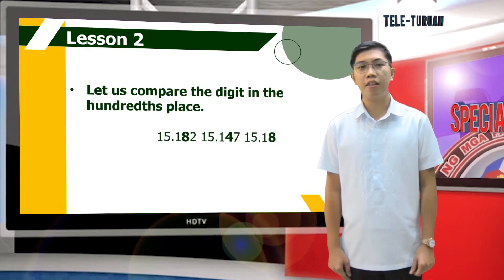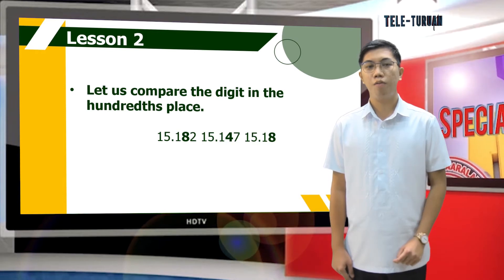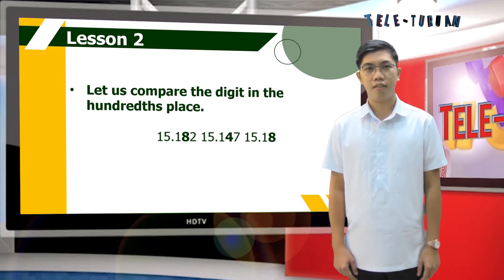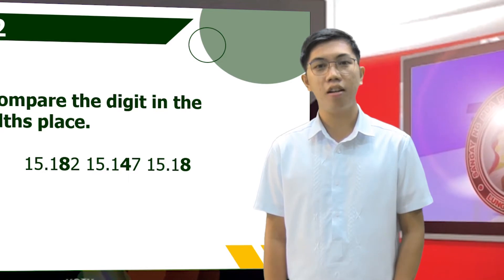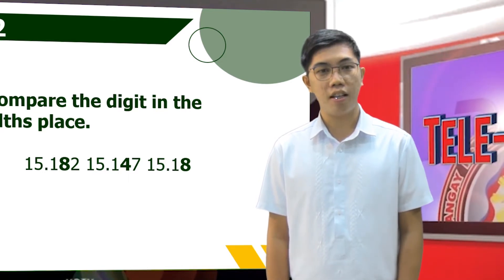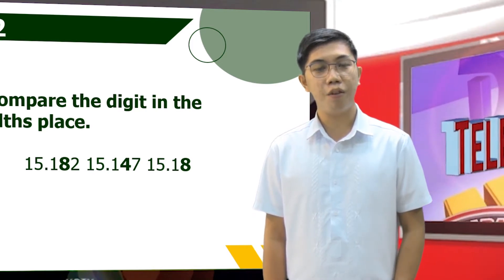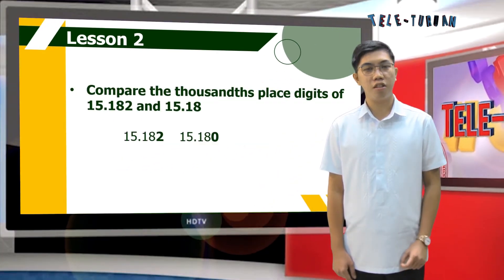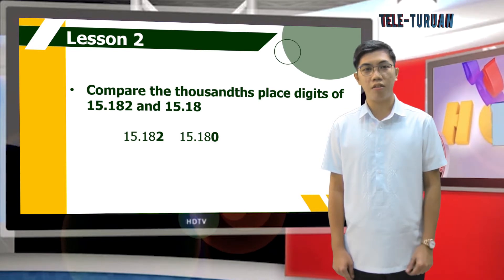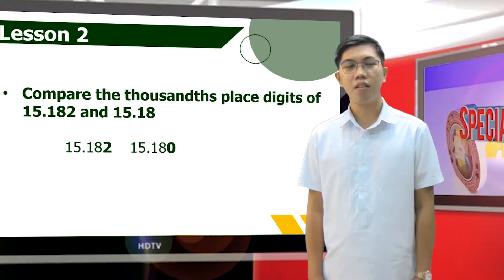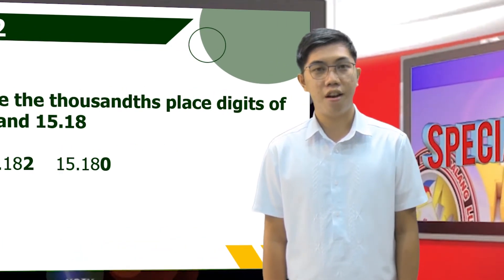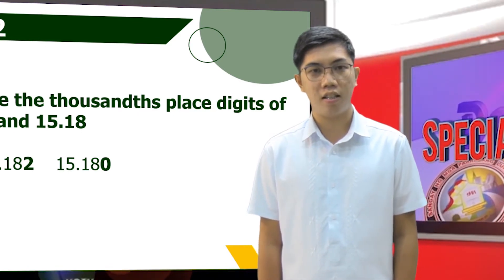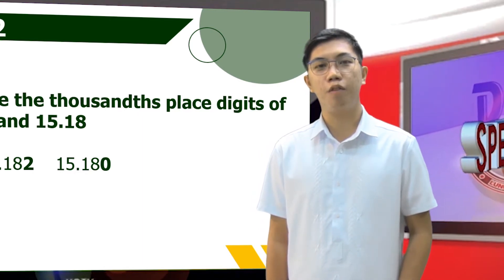Now, let us compare the three decimals with greater values. Compare the thousandths place of fifteen and one hundred eighty-two thousandths, fifteen and one hundred forty-seven thousandths, and fifteen and eighteen hundredths. Two is greater than zero, therefore fifteen and eighteen hundredths is less than fifteen and one hundred eighty-two thousandths, but greater than fifteen and one hundred forty-seven thousandths.